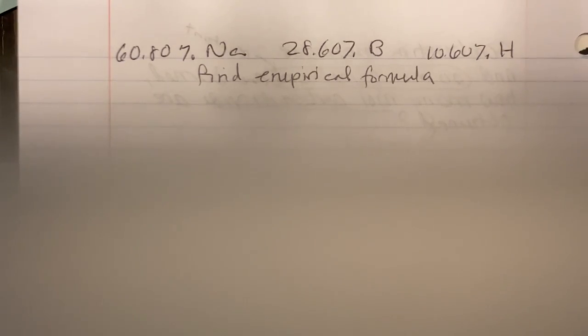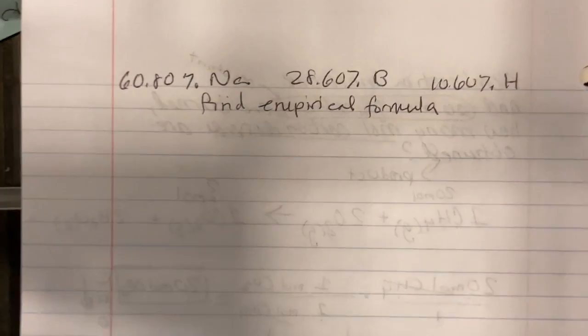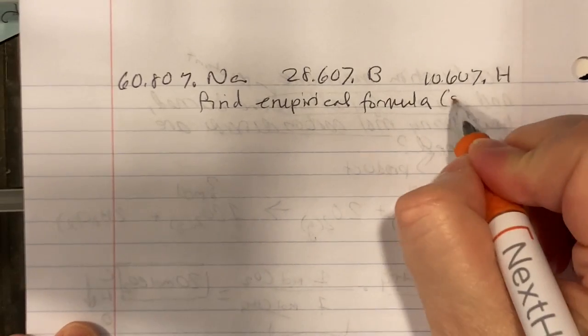All right, here, so we're starting with percent composition. We know this molecule has 60.8% sodium, 28.60% boron, and 10.6% hydrogen. And we need to find the empirical formula. And remember, the empirical formula is that simplest form.